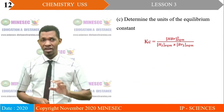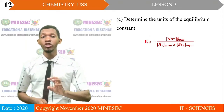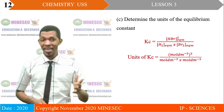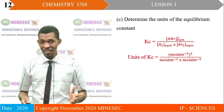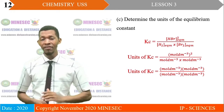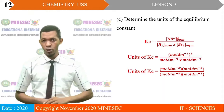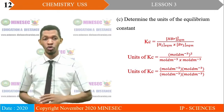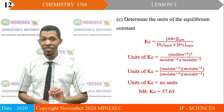Part C: determine the unit of the equilibrium constant. Substituting the unit of molar concentration in the equilibrium expression, we have unit of Kc = (mol dm⁻³)² / ((mol dm⁻³) × (mol dm⁻³)). The units cancel out, and Kc = 57.63, with no unit.